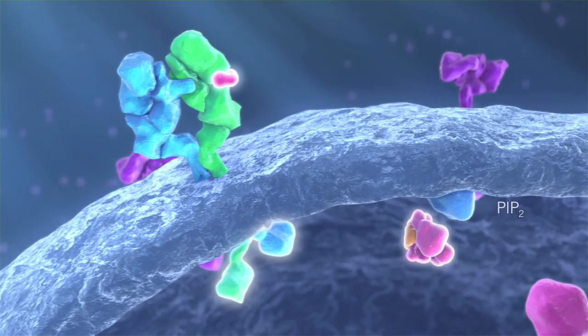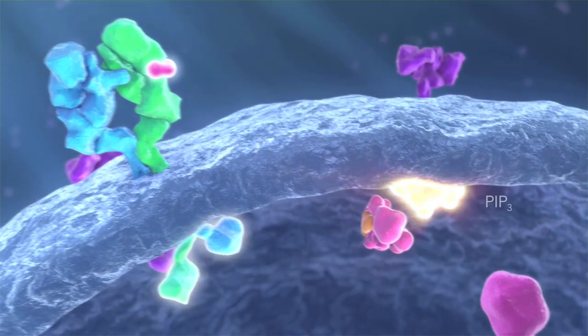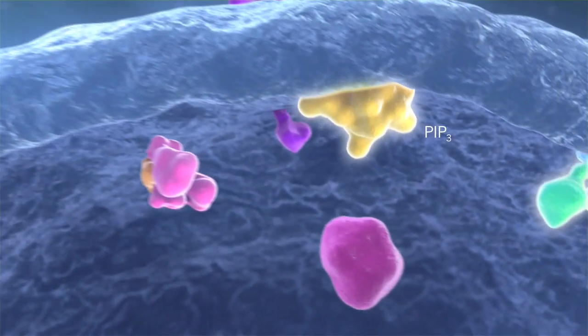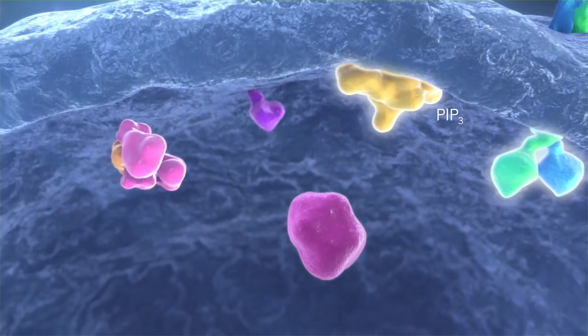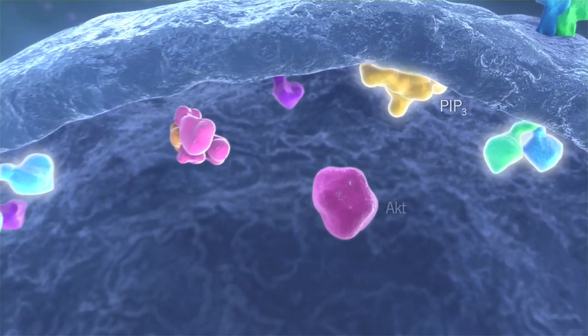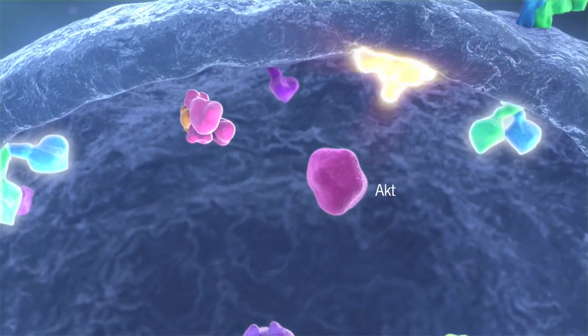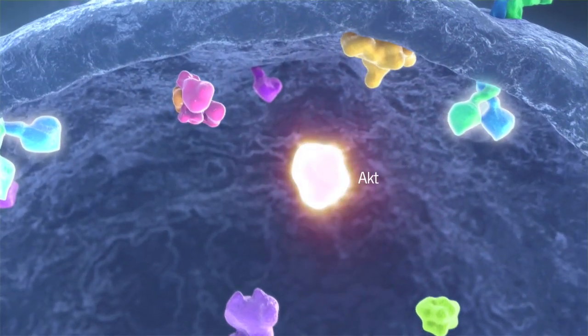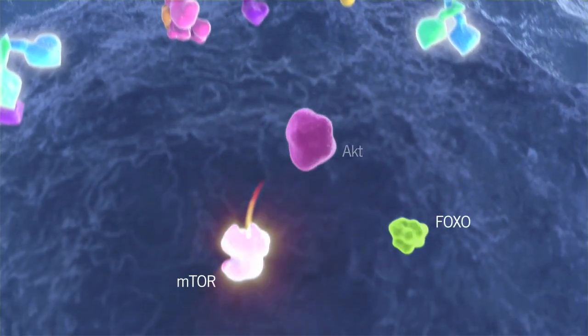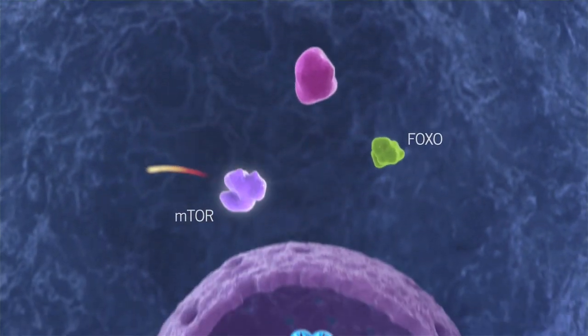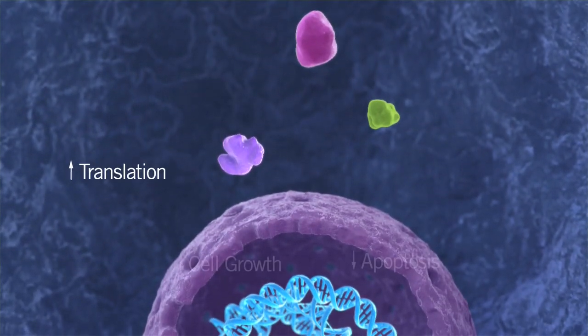PI3K next converts membrane lipid PIP2 to its active PIP3 form, which in turn leads to activation of a key signaling kinase, AKT. AKT promotes cell growth through protein synthesis driven by mTOR signaling and reduces cell death by blocking FOXO activity.